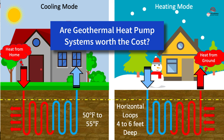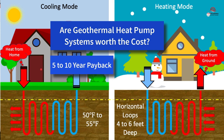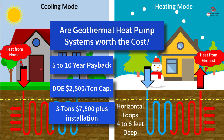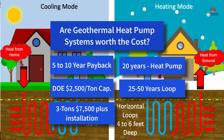Is a geothermal heat pump system worth the cost? Energy savings from the installation of a geothermal heat pump system could take anywhere from 5 to 10 years to pay back the additional investment costs above a conventional system, according to the Department of Energy. The DOE states that an average geothermal heat pump system costs about $2,500 per ton of capacity — so a 3-ton unit would cost about $7,500 plus installation and drilling costs. A comparable air source heat pump system with air conditioning would cost about $4,000, but the energy costs could easily equate to the extra costs of installing a geothermal system. Geothermal heat pump systems have an average 20-plus year life expectancy for the heat pump itself and 25 to 50 years for the underground infrastructure.